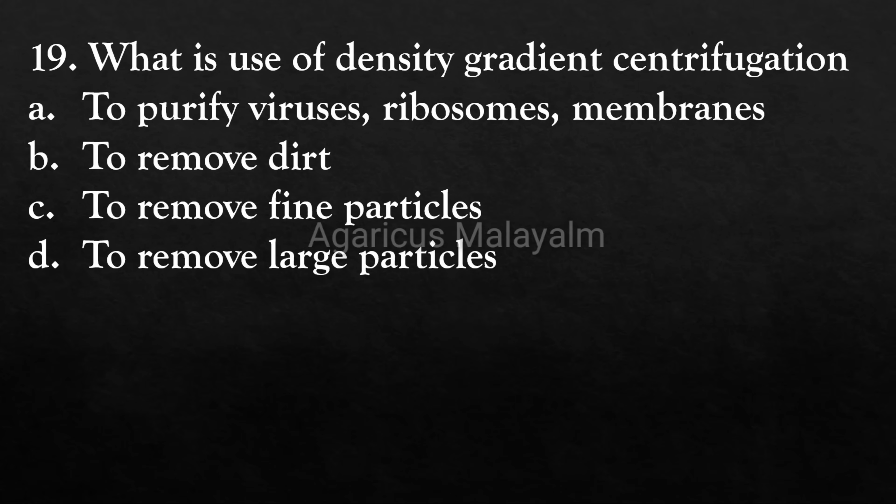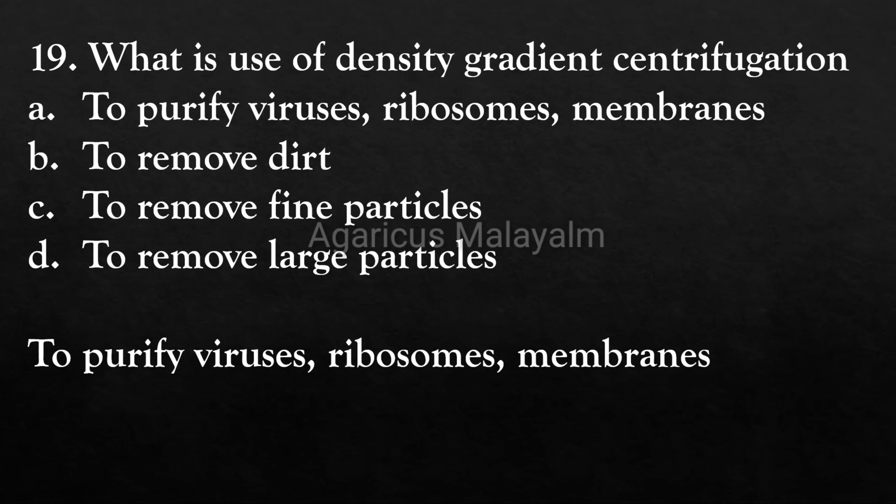Nineteenth question: What is the use of density-gradient centrifugation? Answer options: Option A - to purify viruses, ribosomes, and membranes, Option B - to remove dirt, Option C - to remove fine particles, Option D - to remove large particles. Correct answer: Option A - to purify viruses, ribosomes, and membranes.